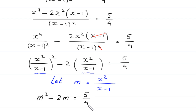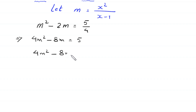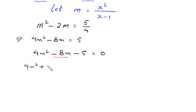Multiplying both sides by 4 gives 4m squared minus 8m equals 5, and moving 5 to the left: 4m squared minus 8m minus 5 equals 0. This is a factorable quadratic equation, so we solve it by factorization. We split negative 8m as plus 2m minus 10m: 4m squared plus 2m minus 10m minus 5 equals 0.